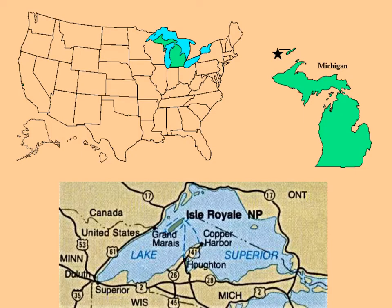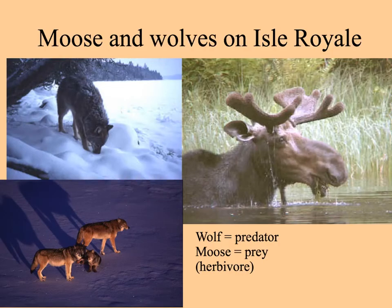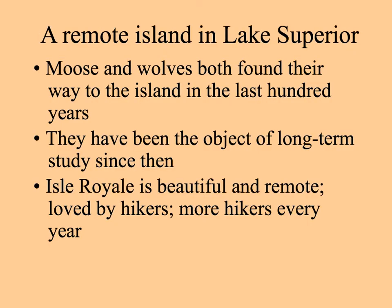Here's an example from Michigan, where north of the northern peninsula there's a lake called Lake Superior with an island called Isle Royale, located within Isle Royale National Park. There, the most gorgeous predator-prey system is that of moose — the large herbivorous prey — and wolves. Photos taken from a plane show wolves in winter, and here's a moose in summer chewing on aquatic vegetation. There's evidence that both the moose and wolves found their way to Isle Royale within the last hundred years, and they've been the object of long-term study by rangers and natural historians since that time.